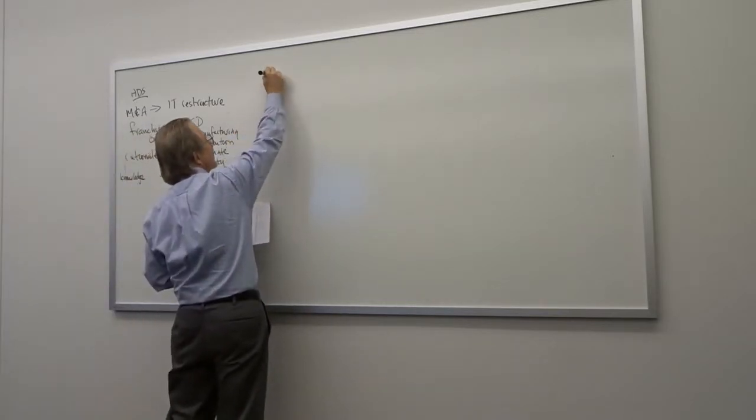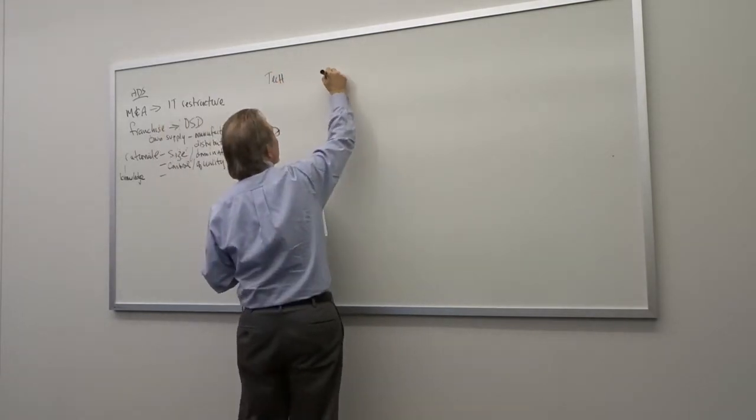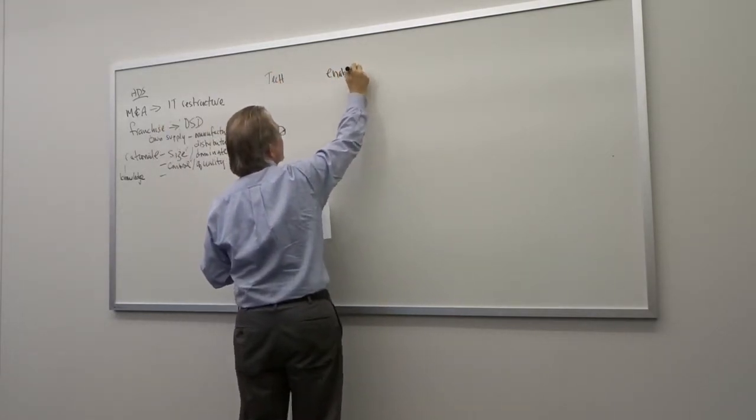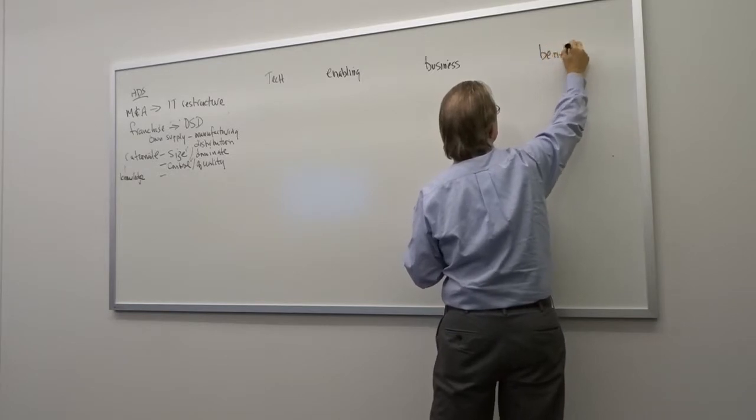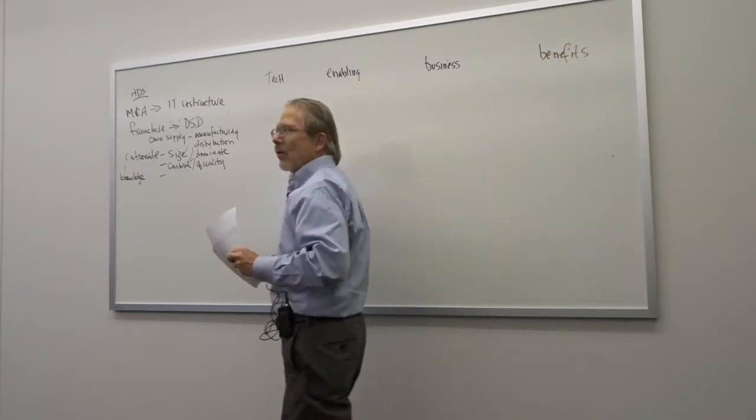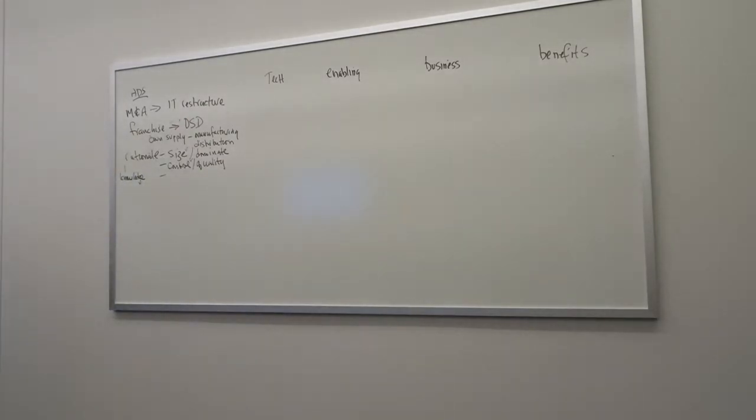One of the ways that I like to look at a case is I like to make a column for the technology, a column for things that I call enabling changes, a column for things that I call business changes, and then a column for the benefits. I like to see how all of those four things are related to each other. So what is the IT technology that they put in place that allowed them to do that?